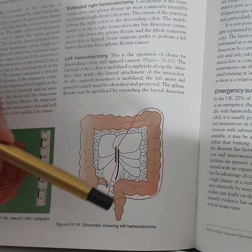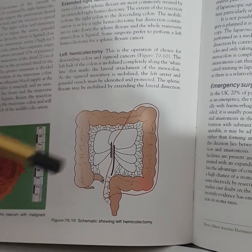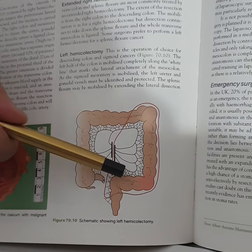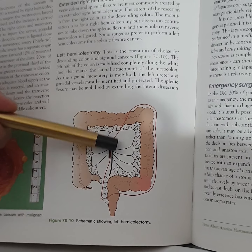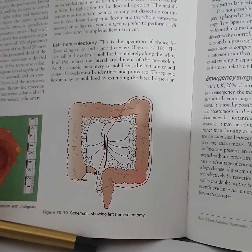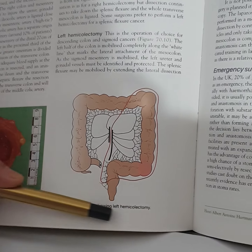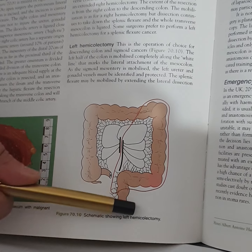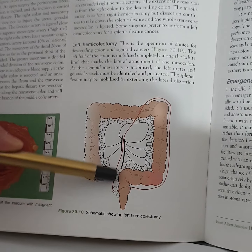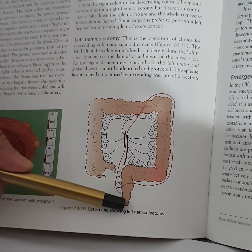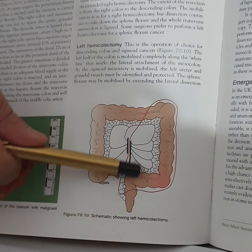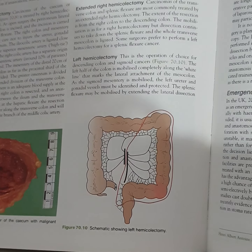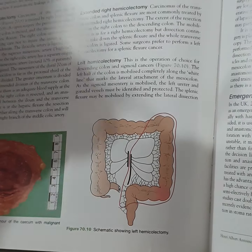For rectal carcinoma in the upper and middle third, anterior resection is performed — resecting 5 cm above and below the tumor with mesentery and lymph nodes, followed by end-to-end anastomosis. For lower third tumors involving the sphincter, abdominoperineal resection is done, removing the whole rectum with the sphincteric complex and anal canal, with a permanent end sigmoid colostomy.